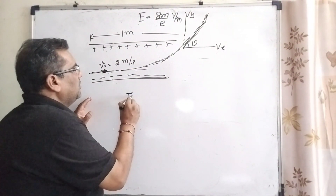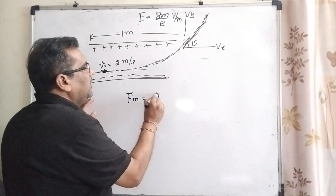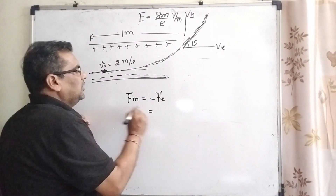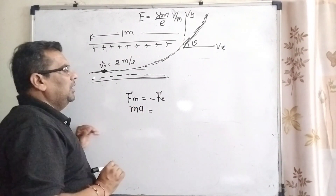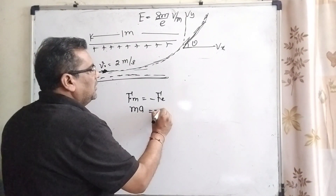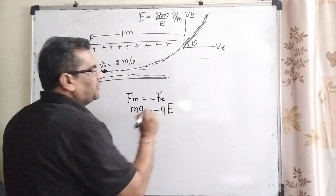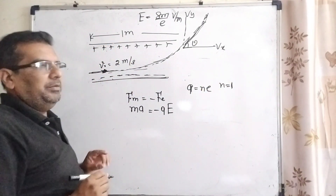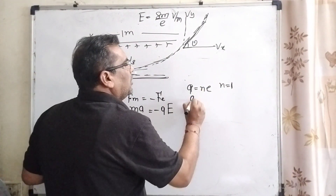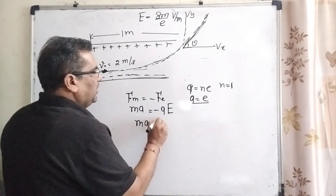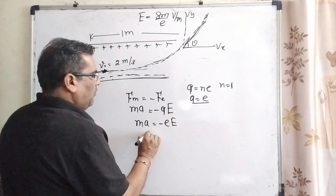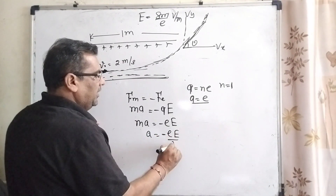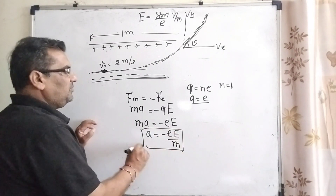Now you know that the mechanical force equals the electrostatic force. Mechanical force means movement — mechanical force equals mass times acceleration. And the electrostatic force? That is charge times electric field. Here the charge is N times e, but N equals 1 because one electron enters, so Q can be written as e. Now substitute the value of Q. The acceleration equals electron charge times electric field divided by mass.